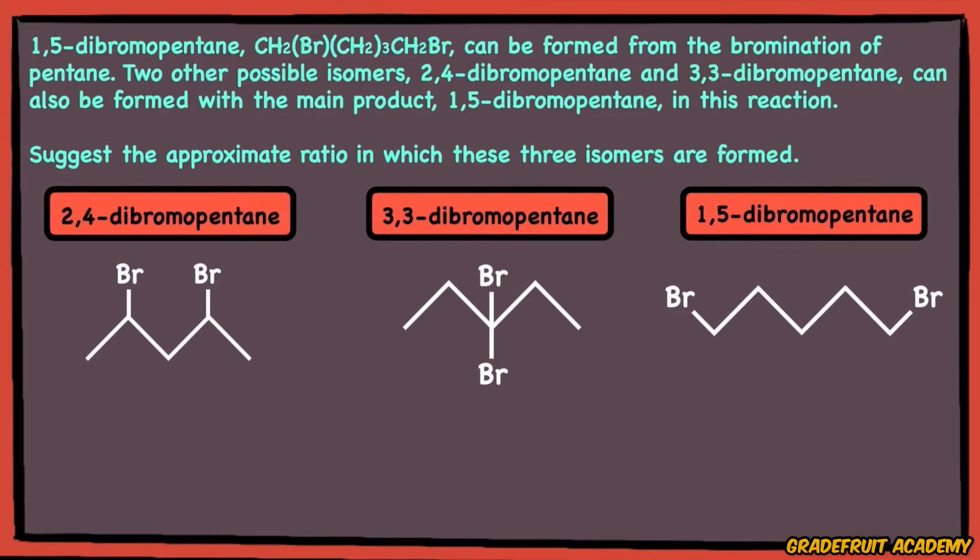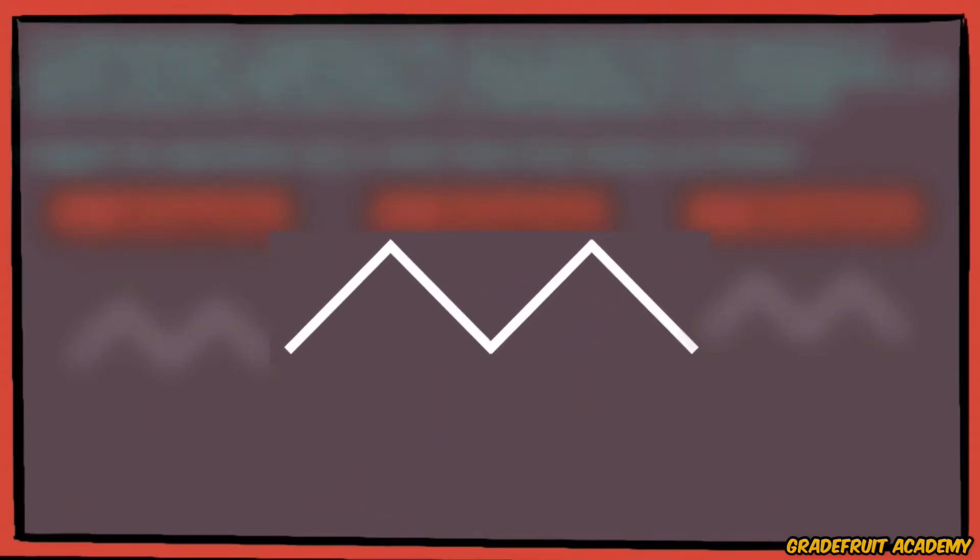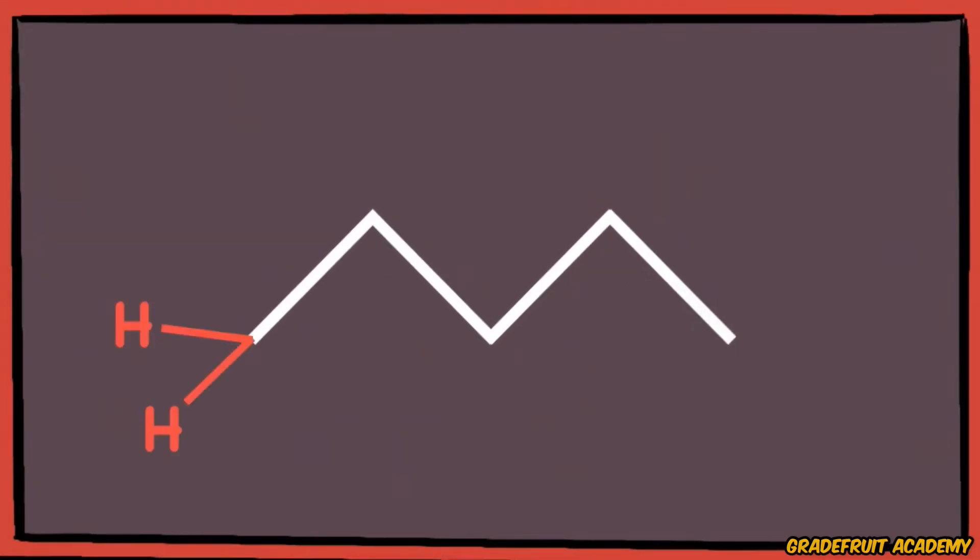So before the alkane isomers were substituted, the pentane originally has 1, 2, 3, 4, 5, 6, 7, 8, 9, 10, 11, 12 hydrogen atoms attached to it, right?